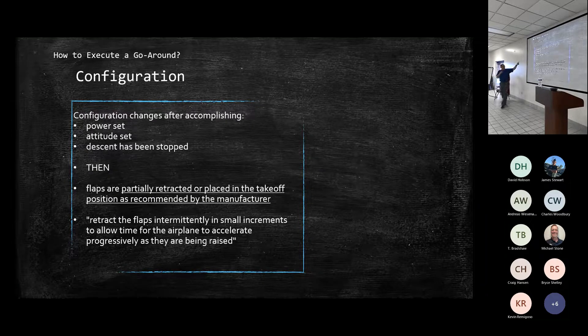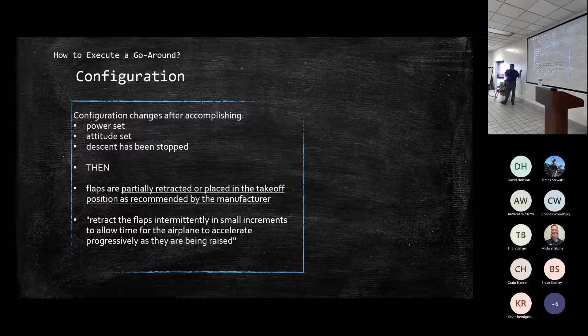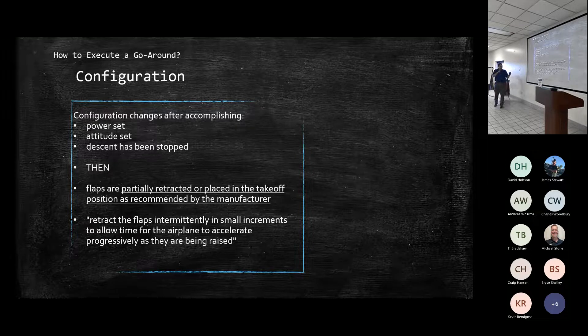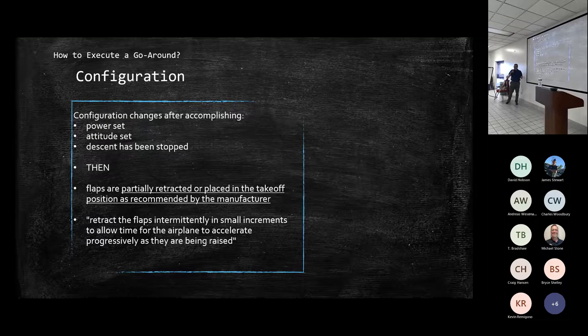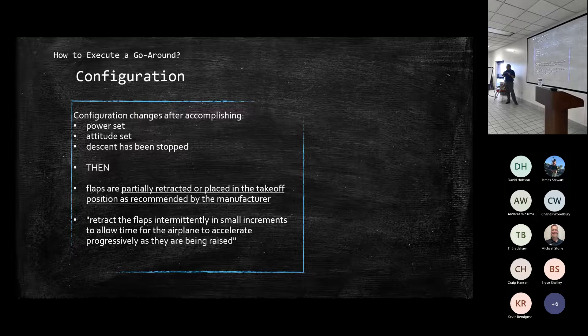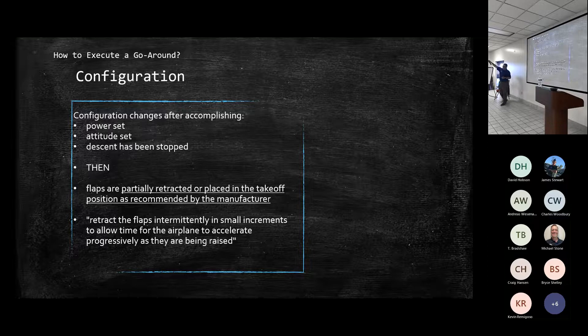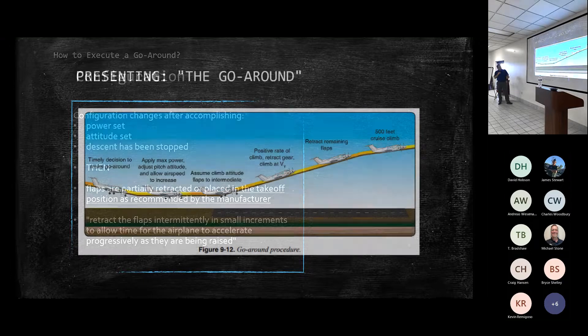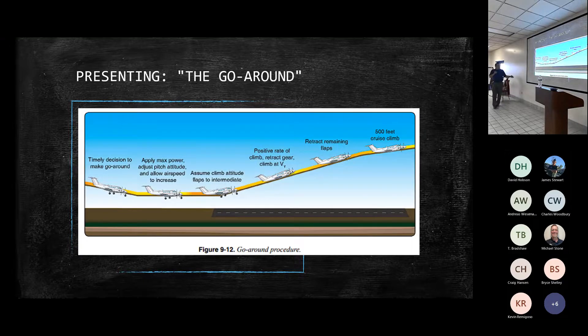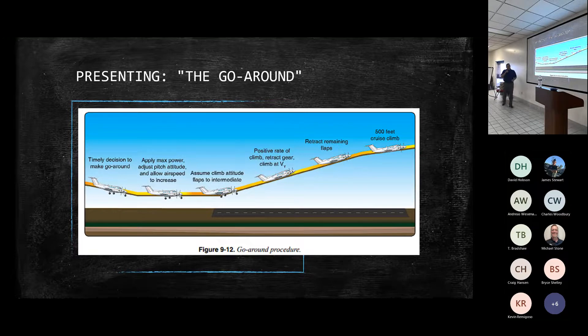Configuration. So power set, your attitude set, you stop the descent. Obviously you've chosen not to land so you don't want to keep going down. Then come in and you're going to that takeoff flap setting or as specified in the airplane flight manual. And then getting back down here to the bottom, retract the flaps intermittently in small increments. Let the airplane build up energy and speed and then pull the flaps out. Each time you're doing that, what happens to your stall speed? There you go. Stall speed's going up. So you need to make sure you've got the energy back as you're doing that. And visual diagram here just talks what we went through there as you're coming in and making sure you're getting that normal climb out.